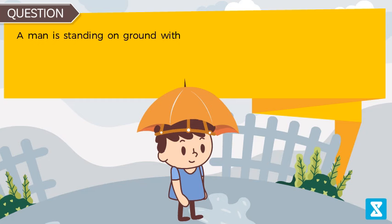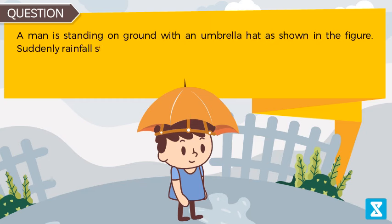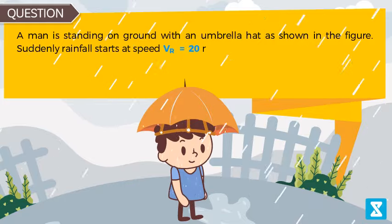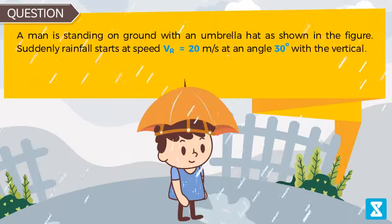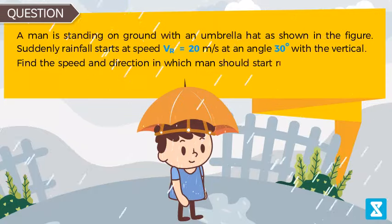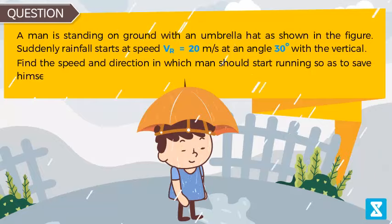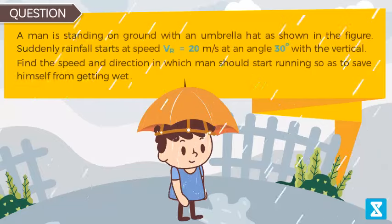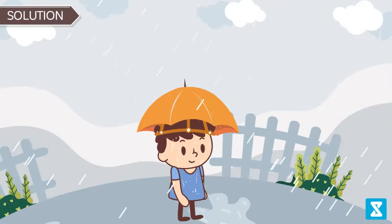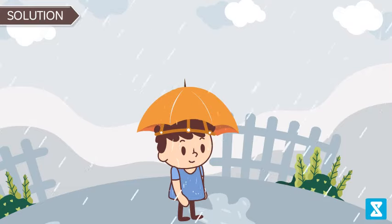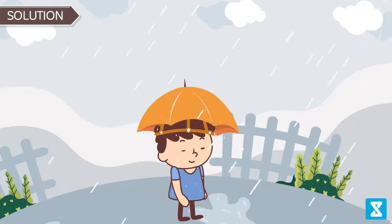Question: A man is standing on the ground with an umbrella hat as shown in the figure. Suddenly, rainfall starts at speed v_r equal to 20 meters per second at an angle of 30 degrees with the vertical. Find the speed and direction in which the man should start running so as to save himself from getting wet. In the question, the man is wearing an umbrella hat — we can safely assume it is very small in size and can only save the man if the rain is falling vertically downwards.